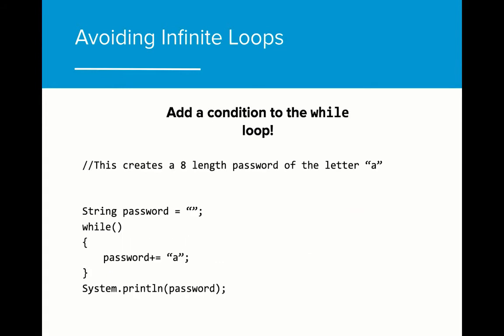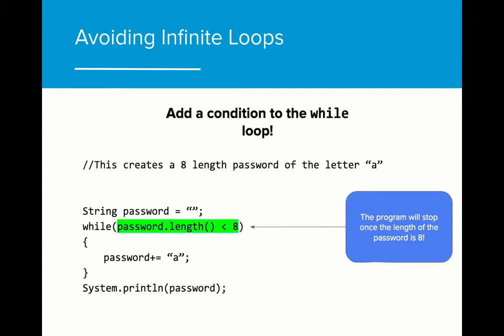Here's another practice problem. Figure out what condition we need to add to the while loop in order to get it to stop executing. For this one, we just need to add the correct condition. Since the password length is zero to start and on each iteration through the loop an 'a' is added, we want to make sure that the program stops once the password is at length eight. We can make sure that happens by testing the length of the password each iteration through the loop. Once the password is the right length, the program will stop.